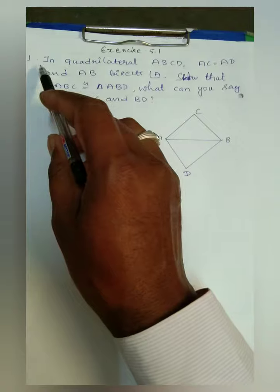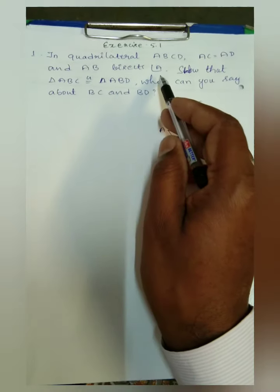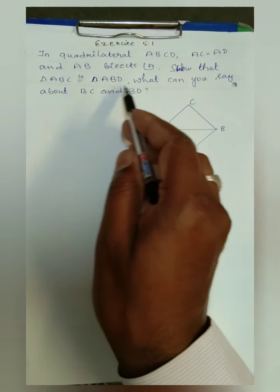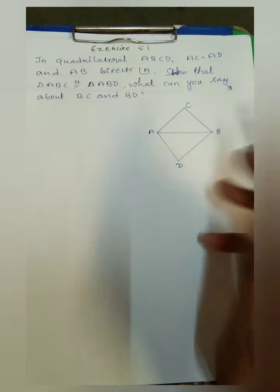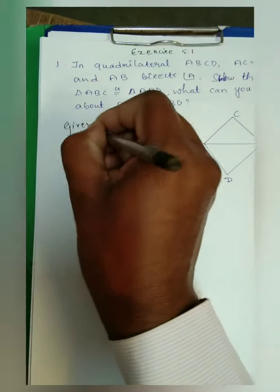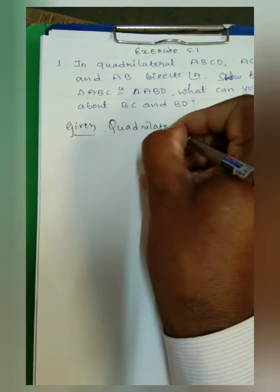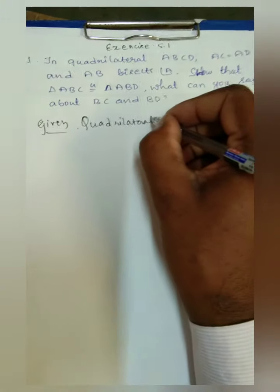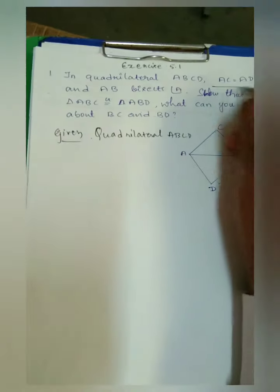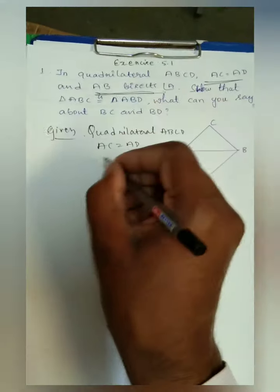Problem 1: In a quadrilateral ABCD, AC is equal to AD and AB bisects angle A. Show that triangle ABC is congruent to triangle ABD. What can you say about sides BC and BD? Given: quadrilateral ABCD, AC is equal to AD, and AB bisects angle A.